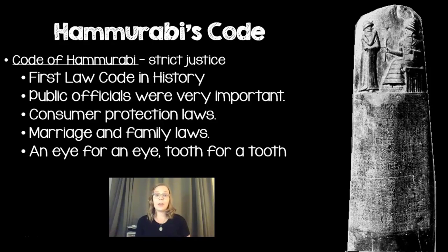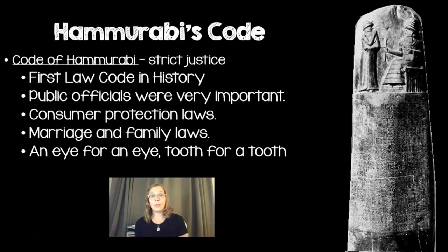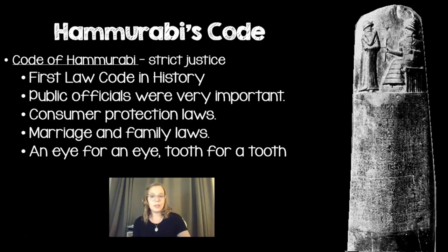In this law code there are things like explaining the role of public officials, how to protect consumers — the people buying and trading goods — and there's family law with laws regarding marriage. The famous quote from this law code is 'an eye for an eye and a tooth for a tooth,' which is also quoted in the Bible. The law code is known for being kind of harsh — things like thievery could be punished by death. We'll look more in depth at this later.